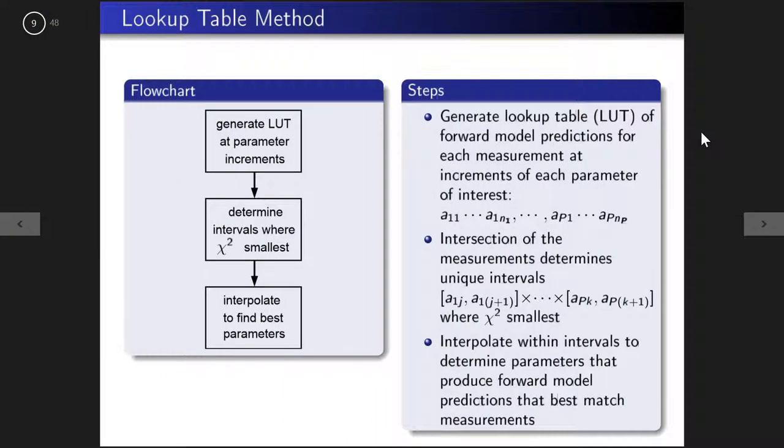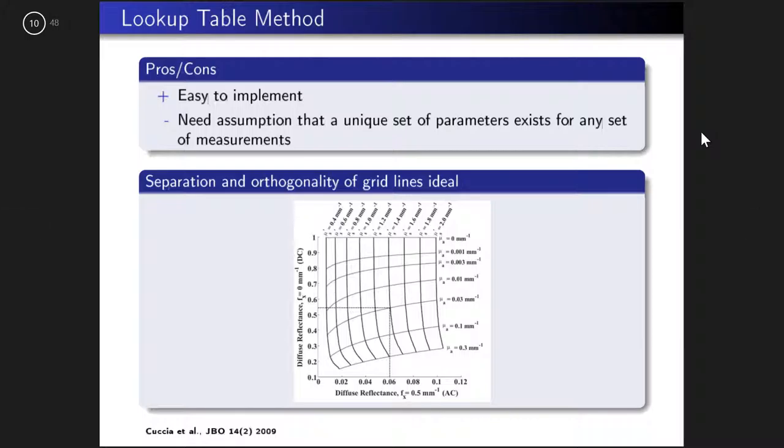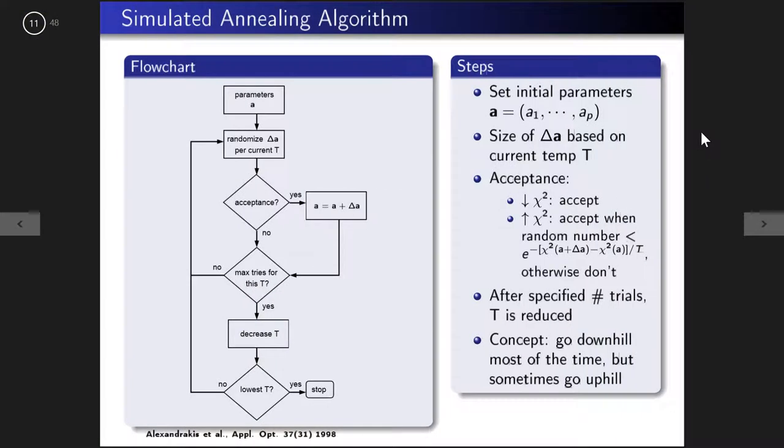One of the nice things is that in David's example, the isocurves are nicely separated and orthogonal — there's no collapsing. We saw in Rolf's presentation a plot of reflectance and transmission based on albedo and slab thickness where the grid collapsed in certain regions, showing the challenge to uniqueness in that range. In David's case, the orthogonality of the isocurves makes the lookup table approach very effective.